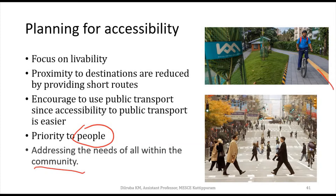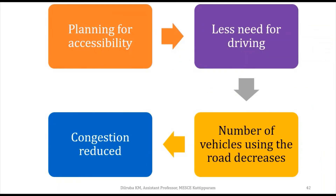In accessibility planning, there are two functions: proximity and connectivity. We reduce the distance to destination — for example, if a small commercial area is set up near the residential area, people don't need to take their car to reach shops or supermarkets; they can walk from home to nearby shops. So they will prefer to walk, and when they prefer to walk or use public transportation, the number of vehicles on the street gets reduced.